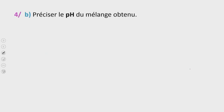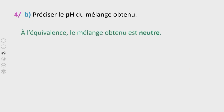Petit b : préciser le pH du mélange obtenu. À l'équivalence, le mélange obtenu est neutre. Donc le pH est égal à 7.